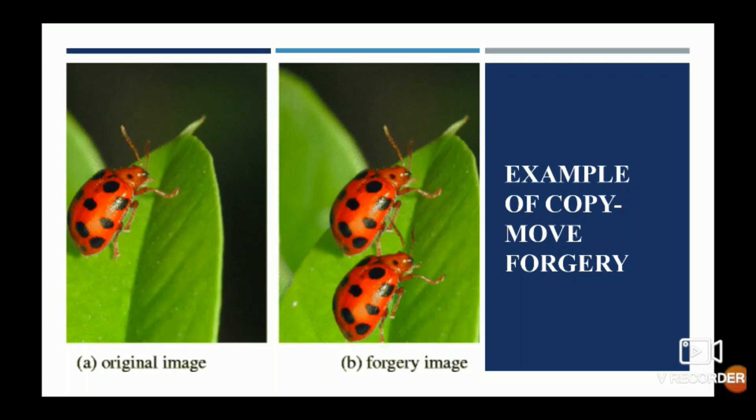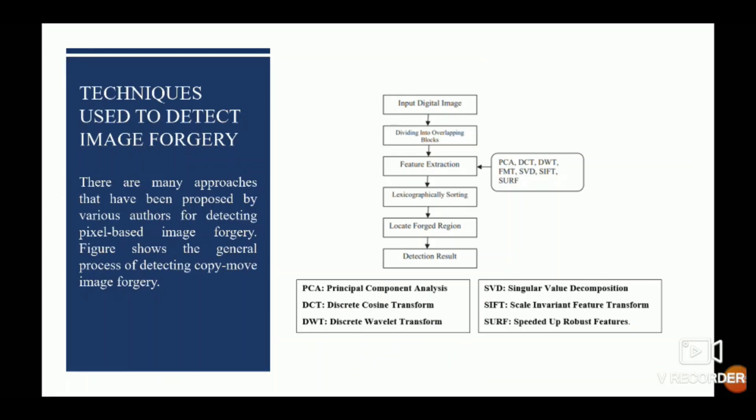Techniques that can be used to detect image forgery — as shown in the flowchart: first, input the digital image; second, divide it into overlapping blocks; third, feature extraction to extract certain features from the image; fourth, lexicographical sorting; then locate the forged region and detect the results.